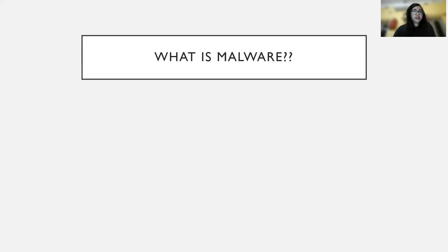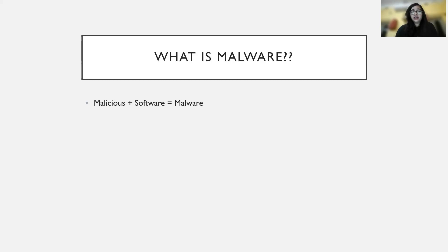So what is malware? It is a conjunction of two words - malicious plus software - together forming malware. Malicious is something which is trying to perform an unethical kind of thing, and software is any program that a developer has written - it's just a piece of code. So if your piece of code's goal is something unethical or malicious, then we call it malware.